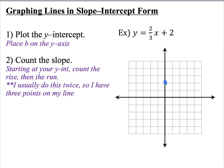And then the second step is to count the slope. So you start at your y intercept and then count the rise and count the run. So if we look, our slope is 2 thirds. So we're going to rise 2, run 3. So I'm going to rise 1, 2 and I'm going to run 1, 2, 3. So here is my point. I can also do the reverse. I can go down 2 and then left 1, 2, 3. And that gives me 3 points on my line.